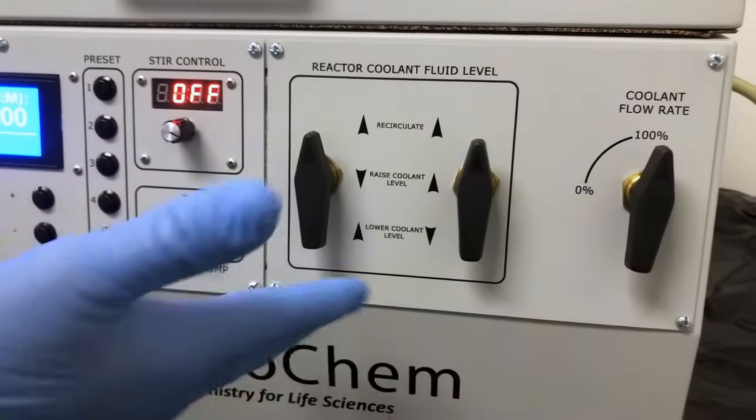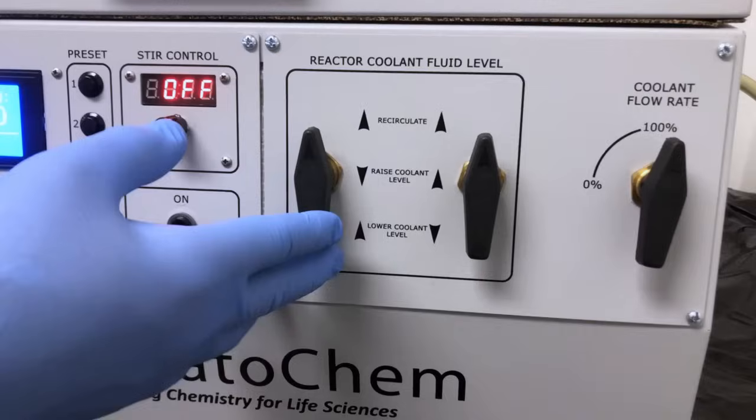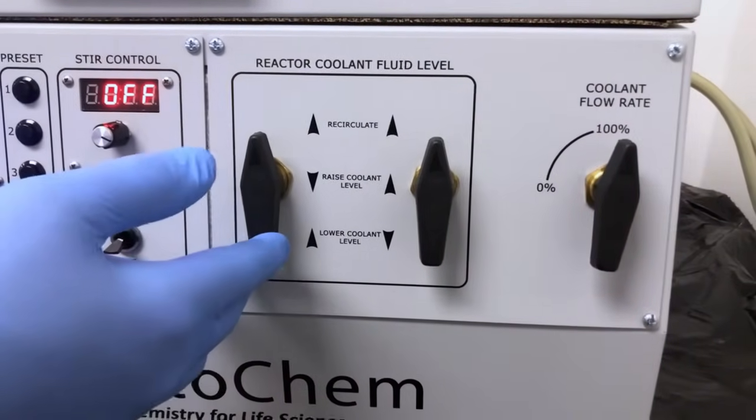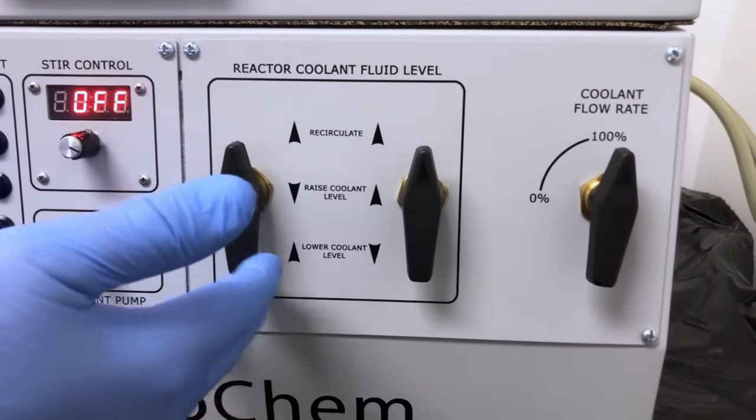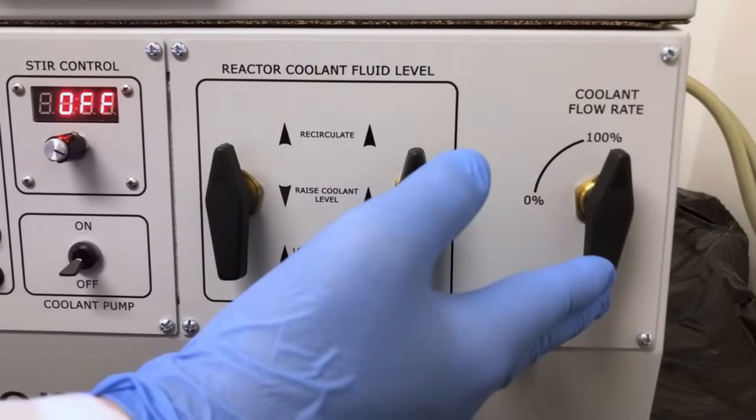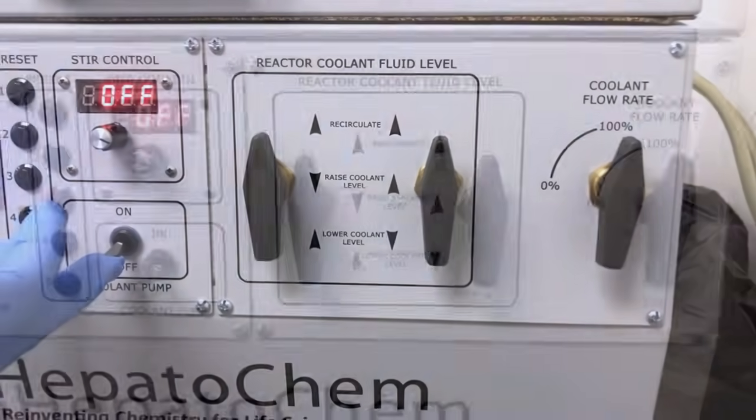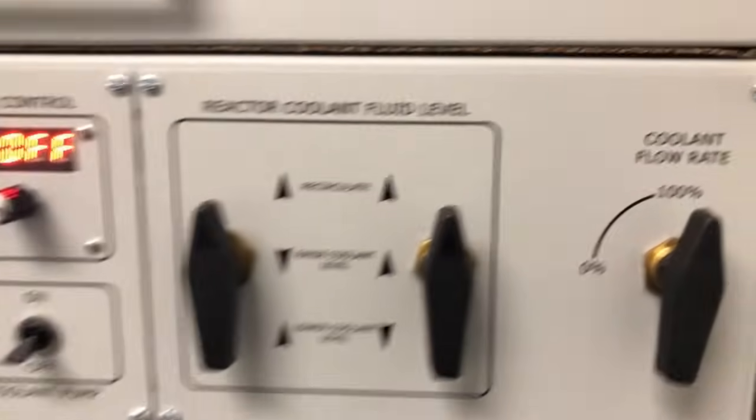The right side of the panel is dedicated to the operation of the Lucent360's integrated temperature control system. The reaction coolant valves enable precise control over the fluid circulating through the reaction chamber with a separate lever to control the flow rate. Peeking along the right side of the machine, you can see the connection ports to the heater chiller.